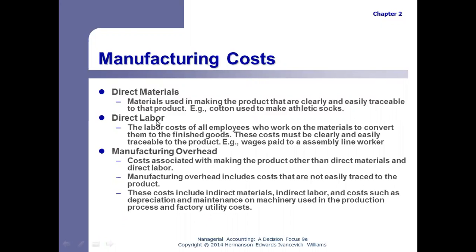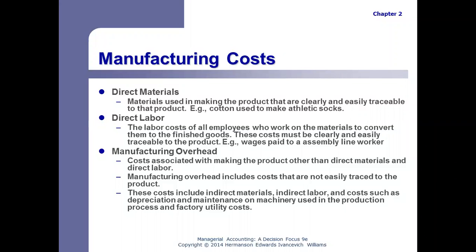For manufacturing costs, there are three different kinds. Direct materials are those materials that go directly into the product — things that can be traced directly to the product. For example, athletic socks: the cotton used to make athletic socks goes directly into the product, so that's a direct material.